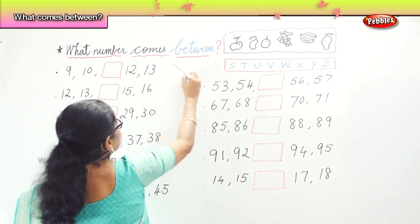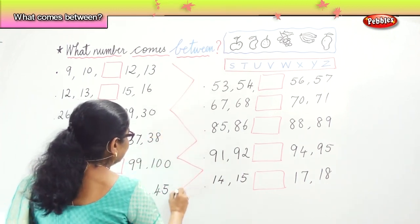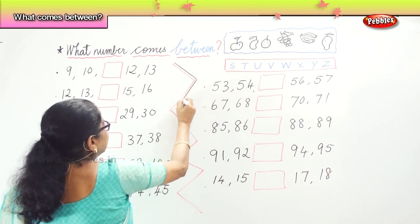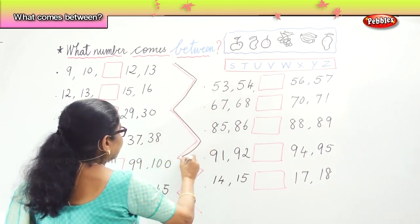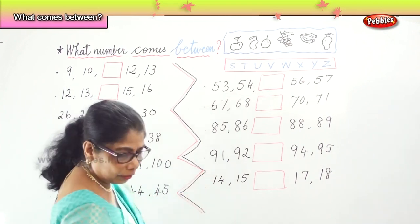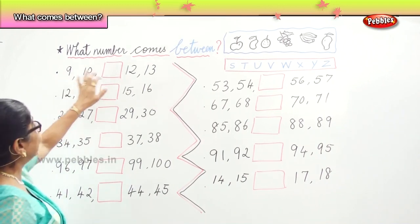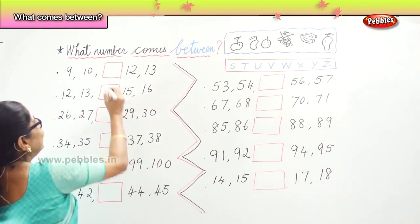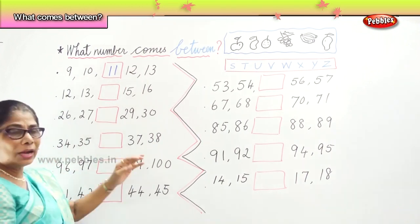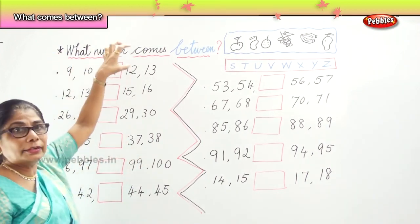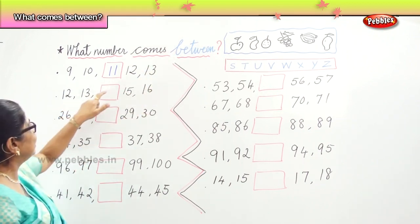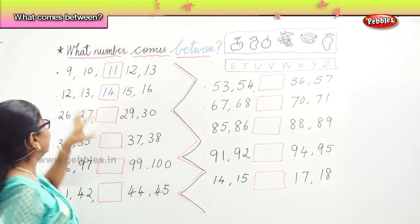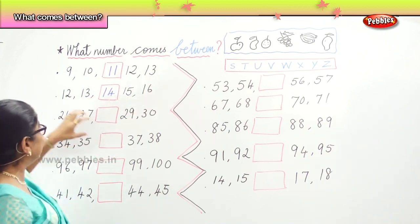What number comes between? Let's begin with the first one. What number is there between 9, 10, __, 12, 13? The number sequence is 9, 10 — 11 — very good! Count and say: 9, 10, 11, 12, 13. Next: 12, 13, __, 15, 16. What's the number? 14. So: 12, 13, 14, 15, 16.